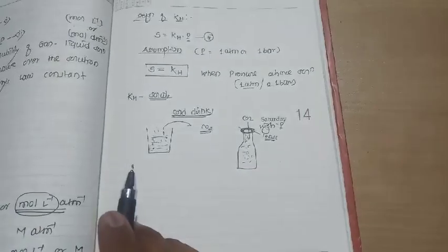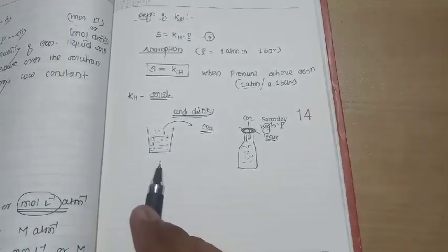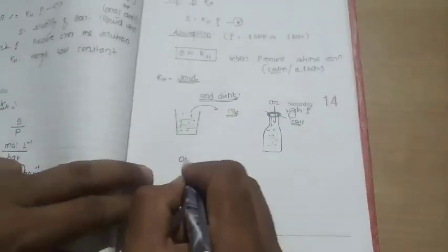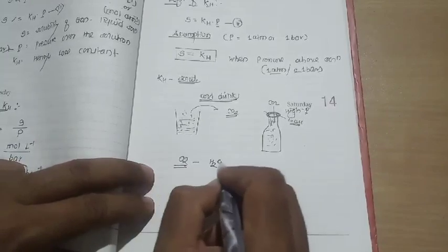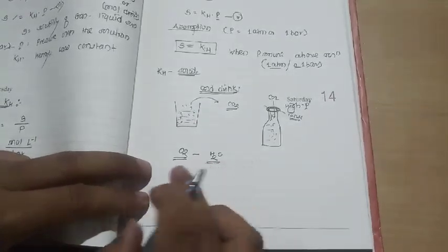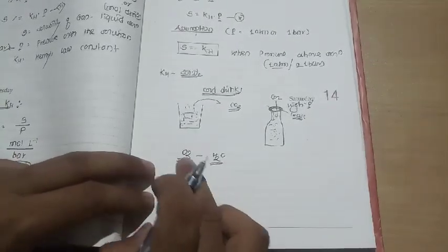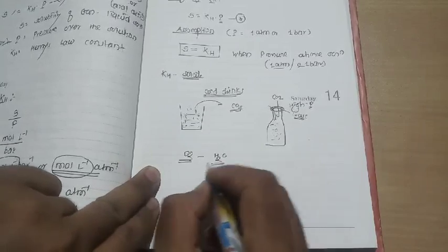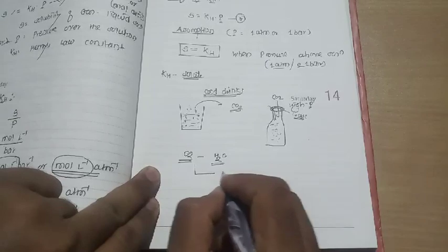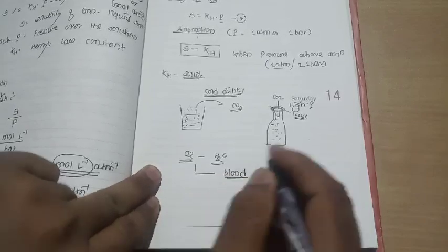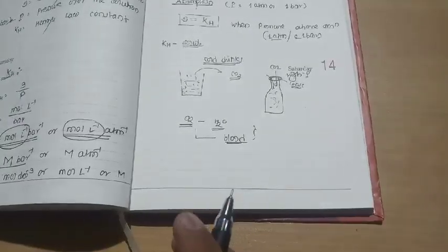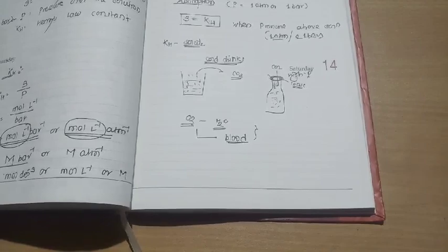Another example is oxygen gas dissolving in water. Oxygen dissolves in water to support aquatic life — fish and aquatic animals use this dissolved oxygen for respiration. Oxygen is even more soluble in blood than in plain water. Henry's Law constant applies here as well.